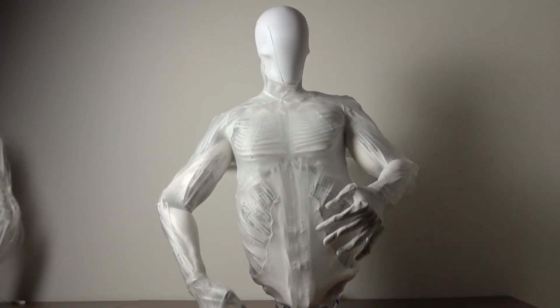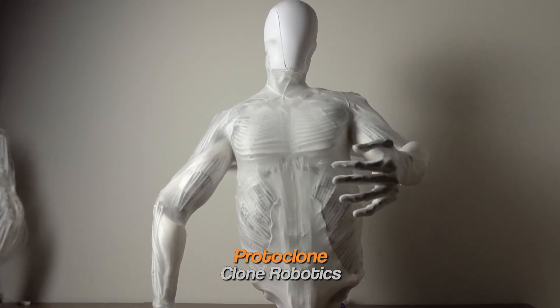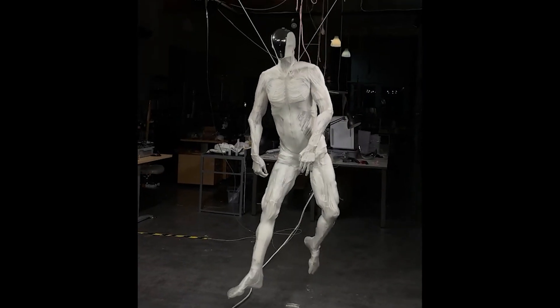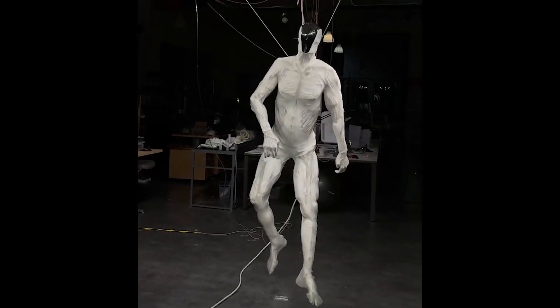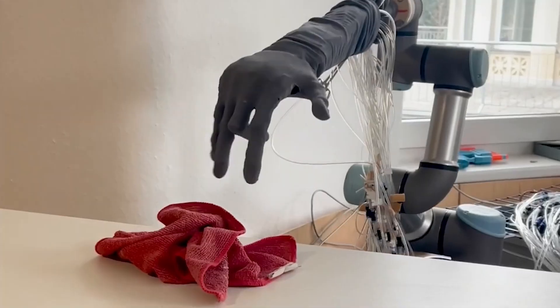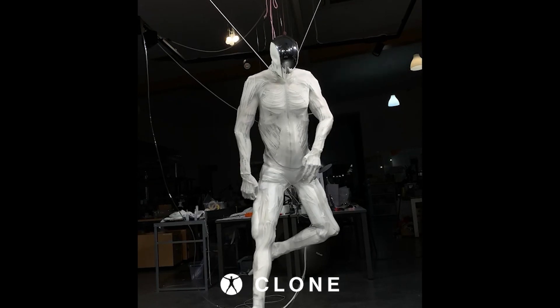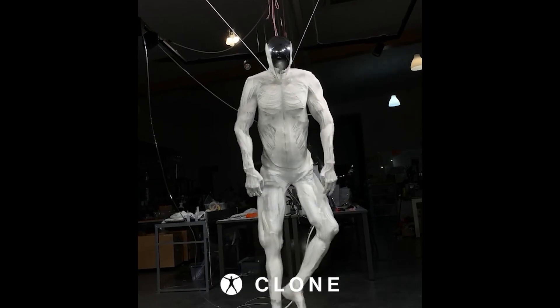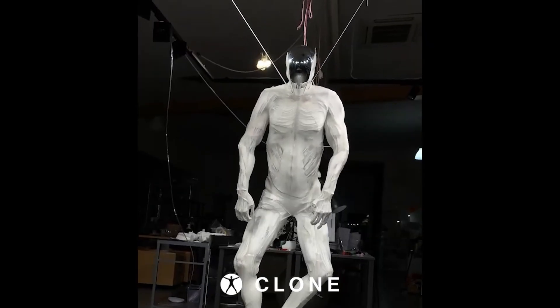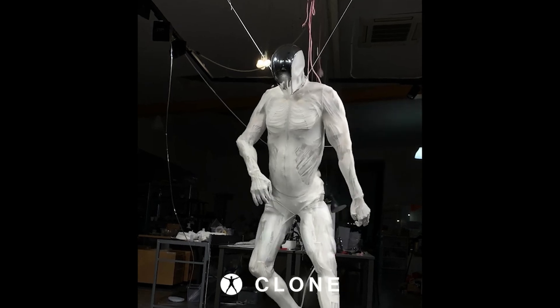There's this new robot called the Protoclone from Clone Robotics, and it's kind of a game changer in the world of humanoid robots. It's designed to look and move like a human, and it's way more advanced than anything we've seen before. Clone Robotics recently released a video showcasing the Protoclone in action, which quickly went viral due to its strikingly lifelike movements.